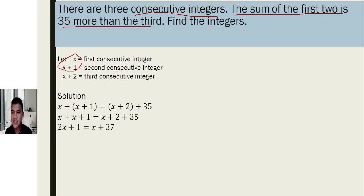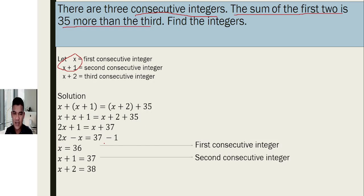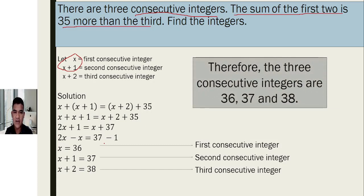Simplifying, we have two x plus one equals x plus 37, since two plus 35 is 37. Combining like terms: two x minus x equals 37 minus 1, so x equals 36. This means 36 is the first consecutive integer, the second is 37, and the third is 38. Therefore the three consecutive integers are 36, 37, and 38.